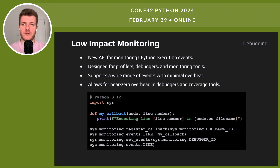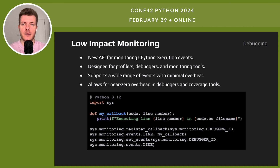PEP 669 transforms how we monitor Python execution — it introduces a new, low-impact monitoring API. This is perfect for profilers, debuggers, and monitoring tools. The API covers a broad range of events with little overhead. Debugging and coverage can now be nearly overhead-free. Previously, tracing calls had a higher performance cost; with PEP 669, monitoring is more efficient and less intrusive.